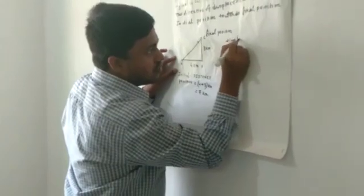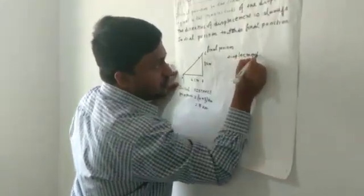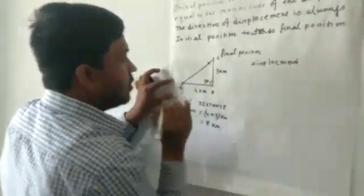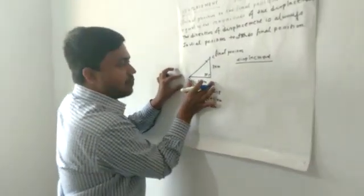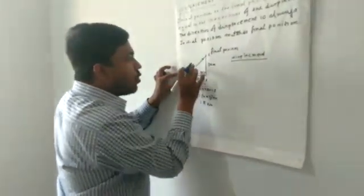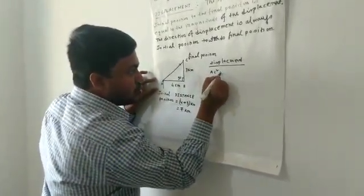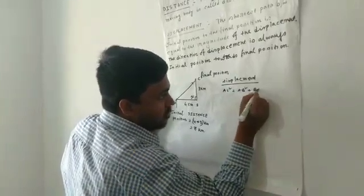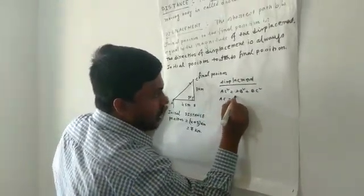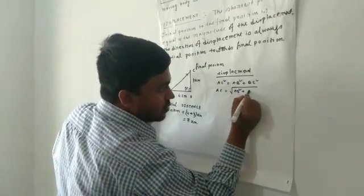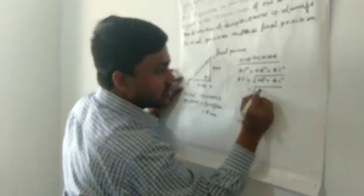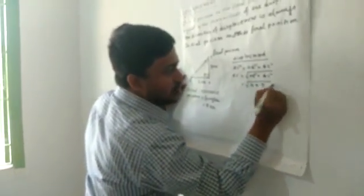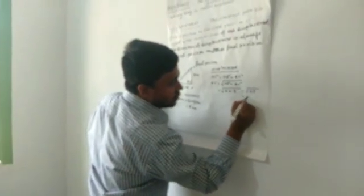Now we can calculate the value of displacement. This angle will be 90 degrees, and we can apply Pythagoras theorem. This is the hypotenuse, this is the base, and this is the height. So AC squared equals AB squared plus BC squared. Therefore AC equals the square root of AB squared plus BC squared, which equals the square root of 25, that is equal to 5 kilometers. So the value of displacement will be 5 kilometers.